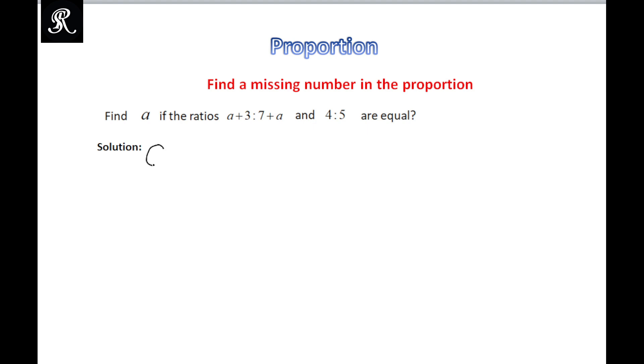In order to solve that problem, we will start from the given information. So here the given information is that a+3 ratio 7+a is equal to 4 ratio 5.